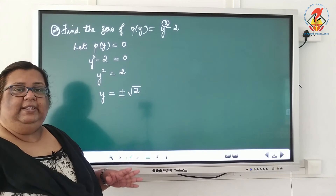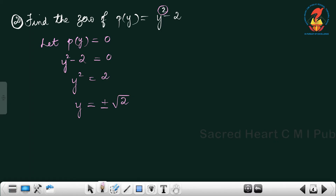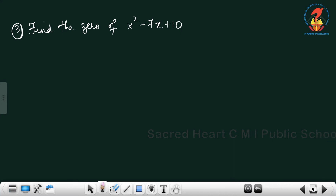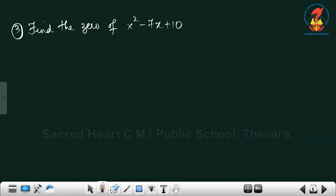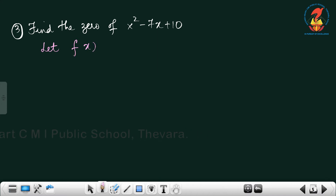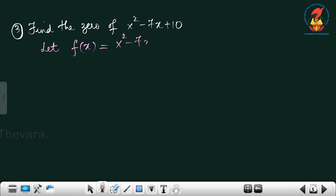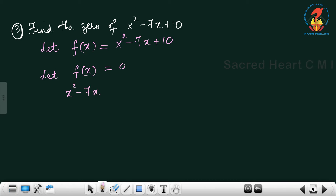One more question: find the zero of x² − 7x + 10. Here we are not given any name for the polynomial, so we can write let f(x) = x² − 7x + 10. Then we have to equate f(x) to zero: x² − 7x + 10 = 0.